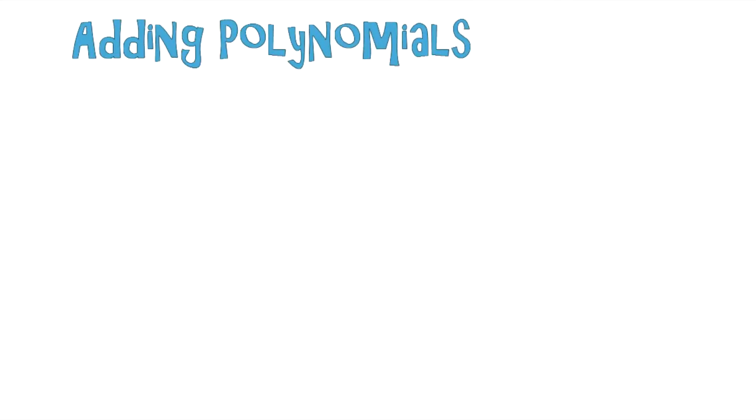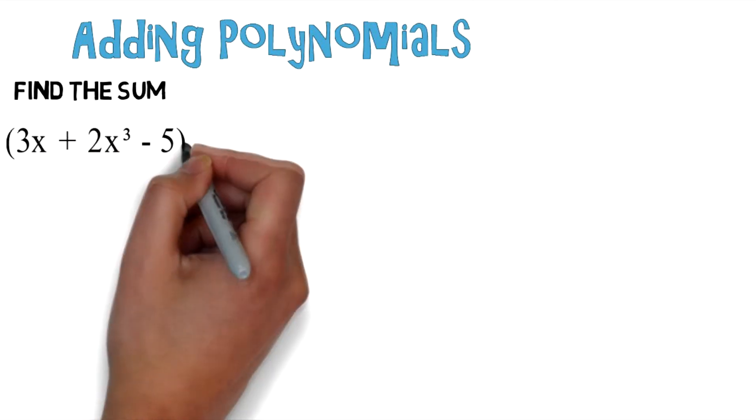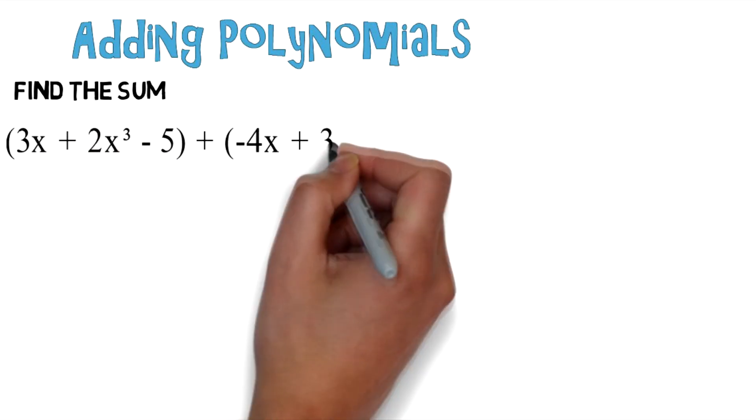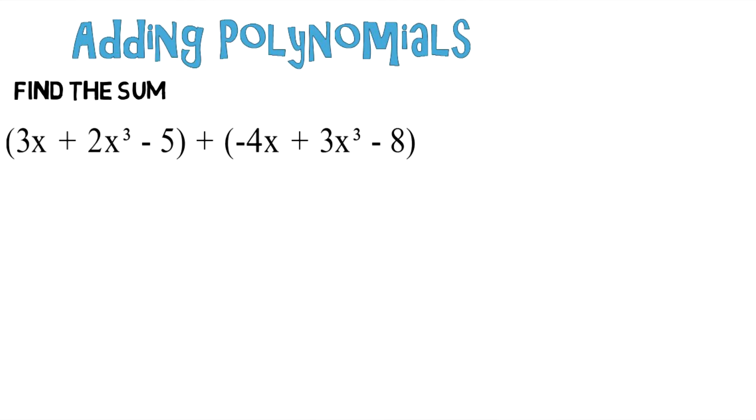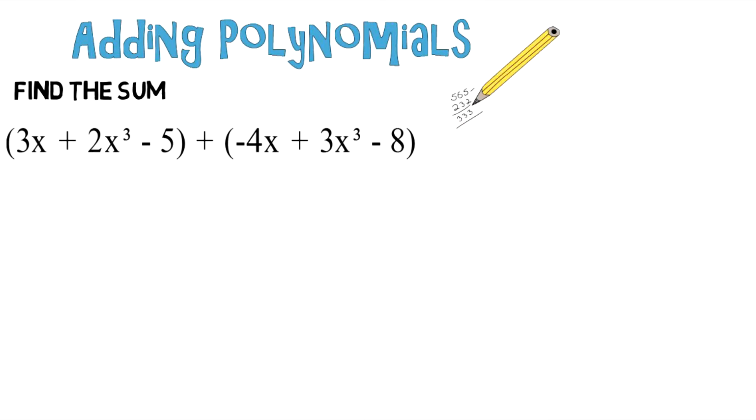Adding polynomials, find the sum. You're given 3x plus 2x to the third power minus 5 plus negative 4x plus 3x to the third power minus 8. At this point I want you to try to work this out for yourself. You can write it down on a piece of paper, and if you get stuck, here are some steps to help you solve the problem.